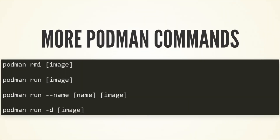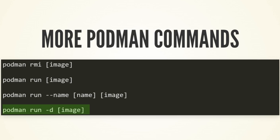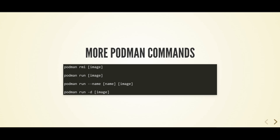Here are some more basic Podman commands. 'podman rmi image' removes an image. 'podman run image' creates a container with a randomized name. 'podman run --name name image' creates a container with a specific name. 'podman run -d image' creates a container running in detached mode.